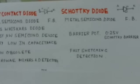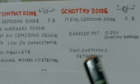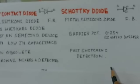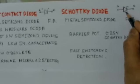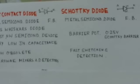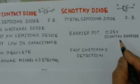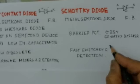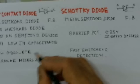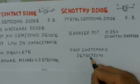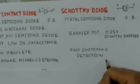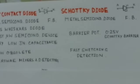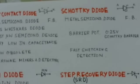The Schottky diode is a modification of the point contact diode and is also a metal-semiconductor diode. Its symbol has a distinctive bar shape. It has a barrier potential of 0.25 volts and similar characteristics to the point contact diode. It is used in fast switching and detection of high-frequency signals like microwave signals.